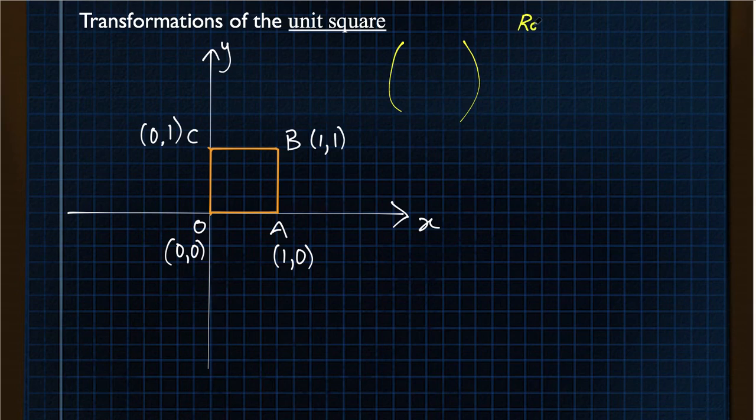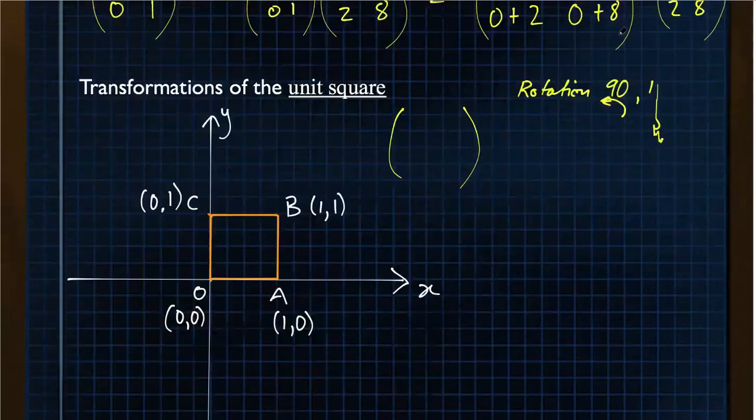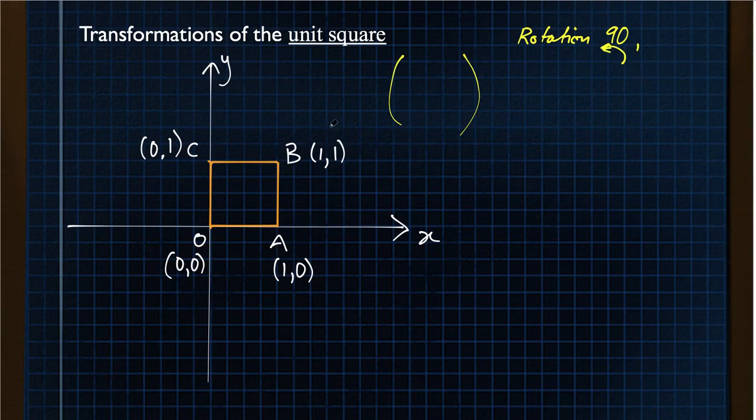We can use this unit square to identify a matrix given to us as a transformation that we would recognize. For example, it might be a rotation of 90, which would be 90 degrees anti-clockwise. Assume that the rotation is anti-clockwise unless told otherwise. It might be a rotation of 180 or 270. So 1 quarter, 1 half or 3 quarters turn around. The origin will always be around the origin. It might be a reflection in one of the axes. Or it might be an enlargement.